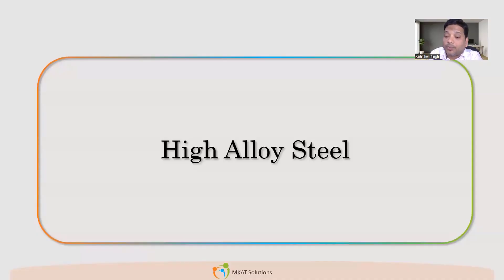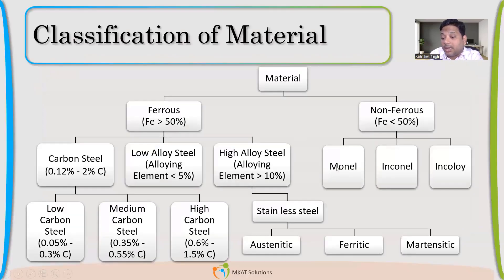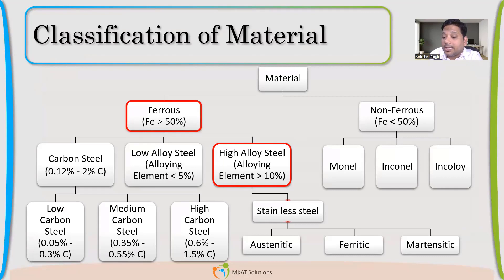Now let us jump to high alloy steel. In high alloy steel, if we see here, mainly the material which we use is stainless steel. Stainless steel is further classified into austenitic, ferritic, and martensitic.